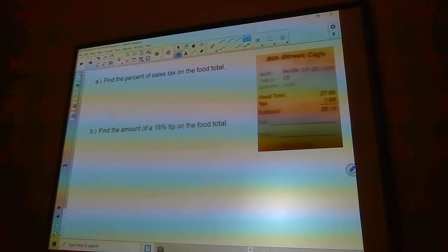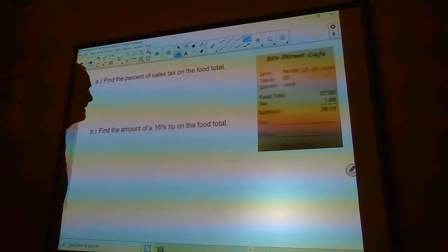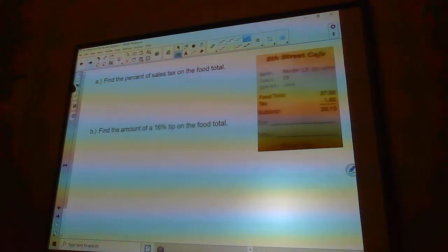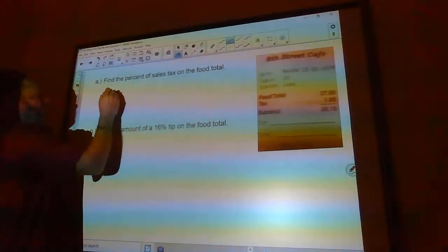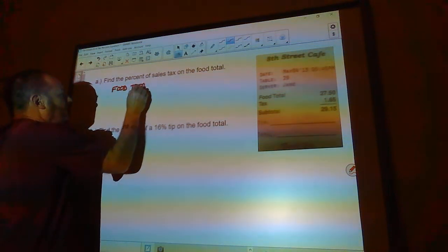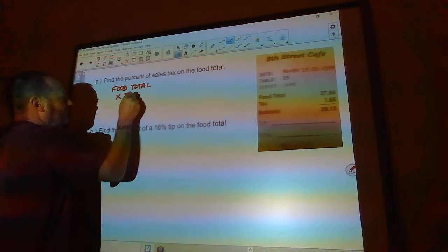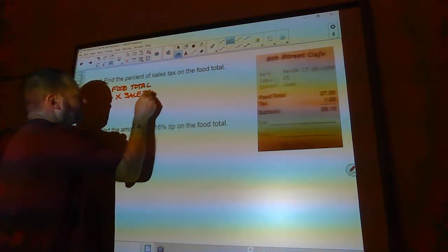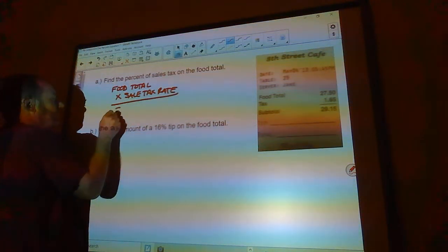Find the percent of sales tax on the food total. Okay, so the food total is $27.50. So here's what you would do: you would take your food total and you would multiply that by the sales tax rate, and that would equal your sales tax.